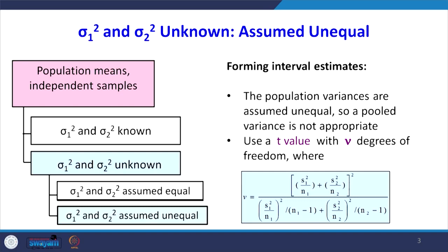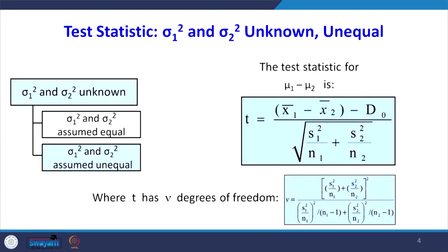So we have to use the T value with new degrees of freedom. The formula for degrees of freedom is: nu equals S1 square by N1 plus S2 square by N2, whole square, divided by (S1 square by N1) whole square divided by (N1 minus 1), plus (S2 square by N2) whole square divided by (N2 minus 1). The T statistic is X1 bar minus X2 bar divided by the square root of S1 square by N1 plus S2 square by N2.